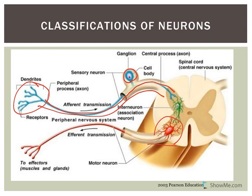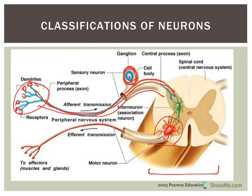In this sensory neuron, the dendrites are the location where we would have sensory receptors. That information is carried up along the axon, the cell body is located up here on the side, and that information is brought towards the central nervous system — here you see the spinal cord. The two neurons shown in green and red are structurally classified as multipolar neurons — you see the cell body, dendrites coming off of it, and then one axon. Interneurons and motor neurons tend to be multipolar neurons.